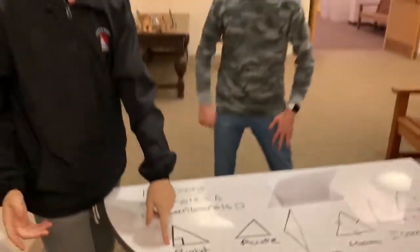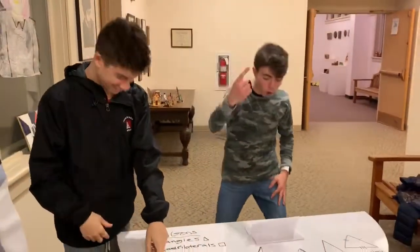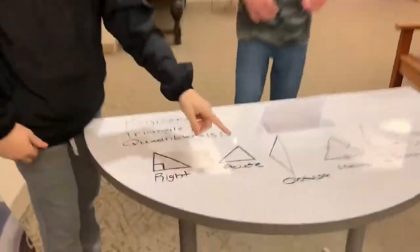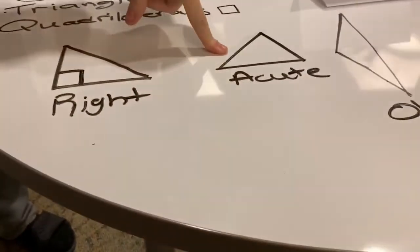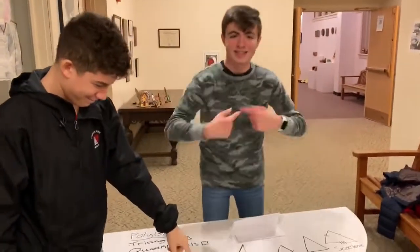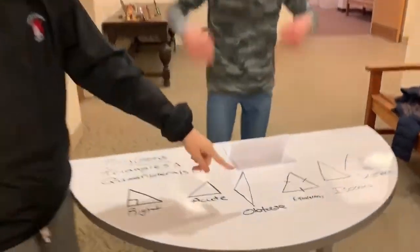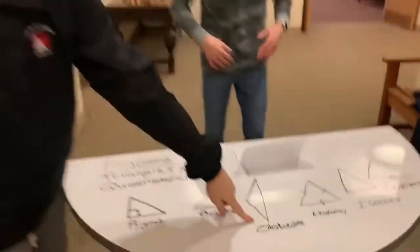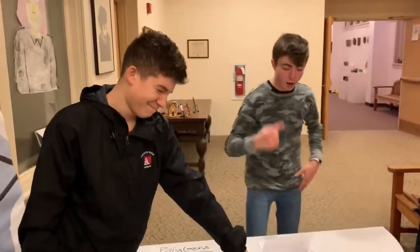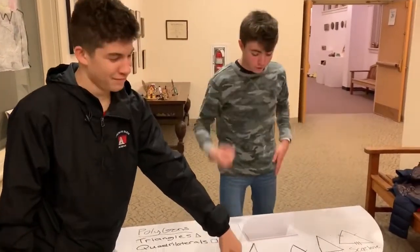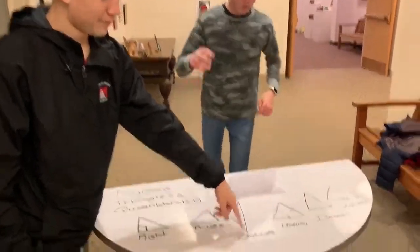Got one 90 degree angle. Acute triangles have less than 90 degree angles. Obtuse triangles got one big angle greater than 90 degrees.